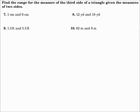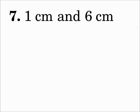Find the range of the measure of the third side of a triangle given the measures of two sides. Number 1: two sides are 1 centimeter and 6 centimeters. We're looking for the length of the third side. We don't know if the third side is the smallest, the middle, or the largest, so let's test each way and see what happens.